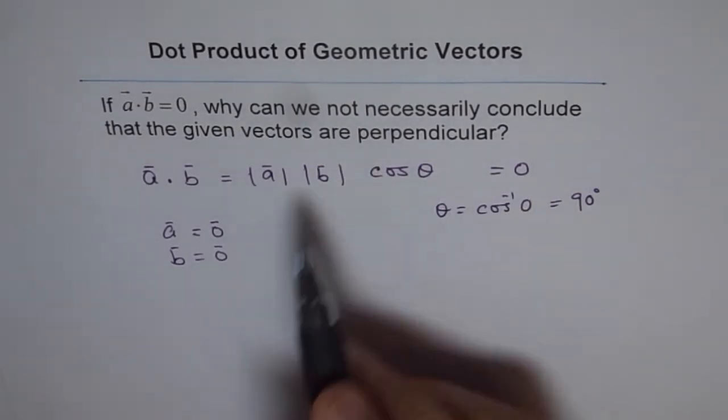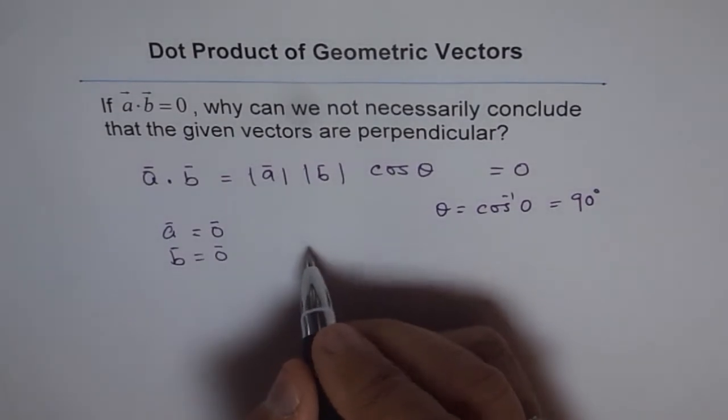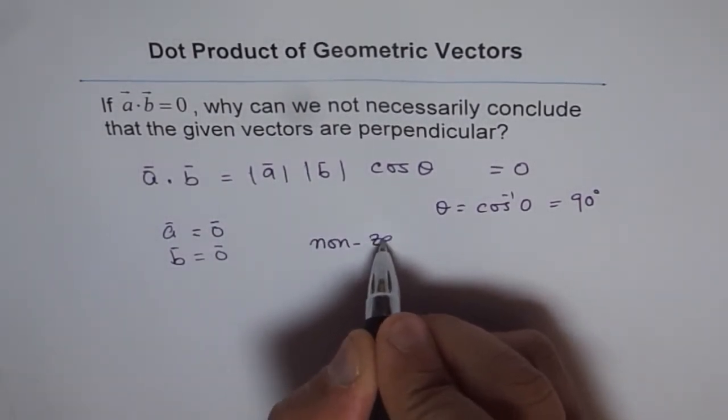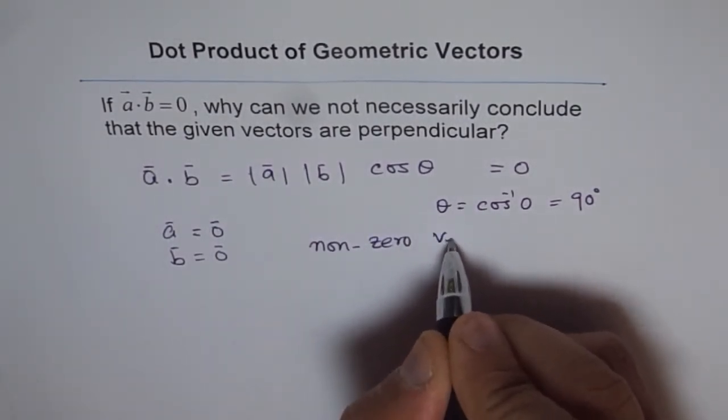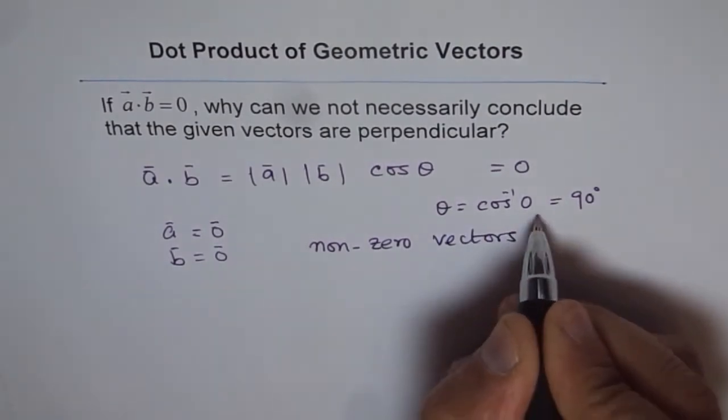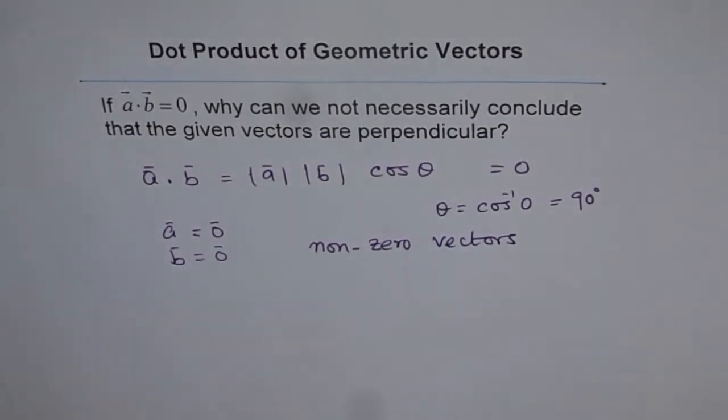So in this, you should have a condition that for non-zero vectors, this statement is true. That is the condition.